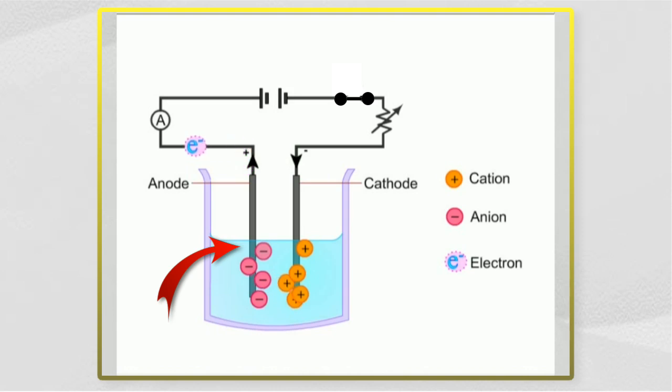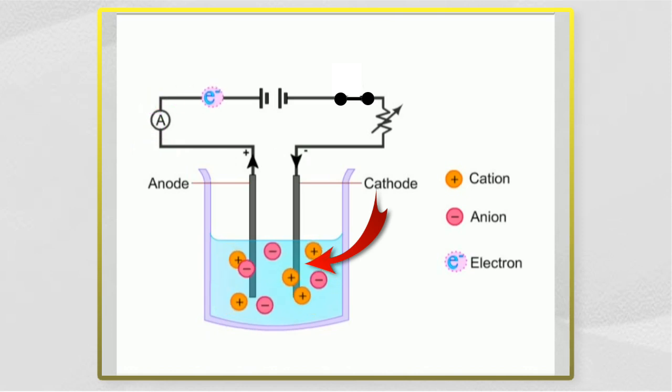During electrolysis of a molten compound, anions will be attracted to the anode and be discharged by releasing electrons. Cations will be attracted to the cathode and be discharged by accepting electrons.